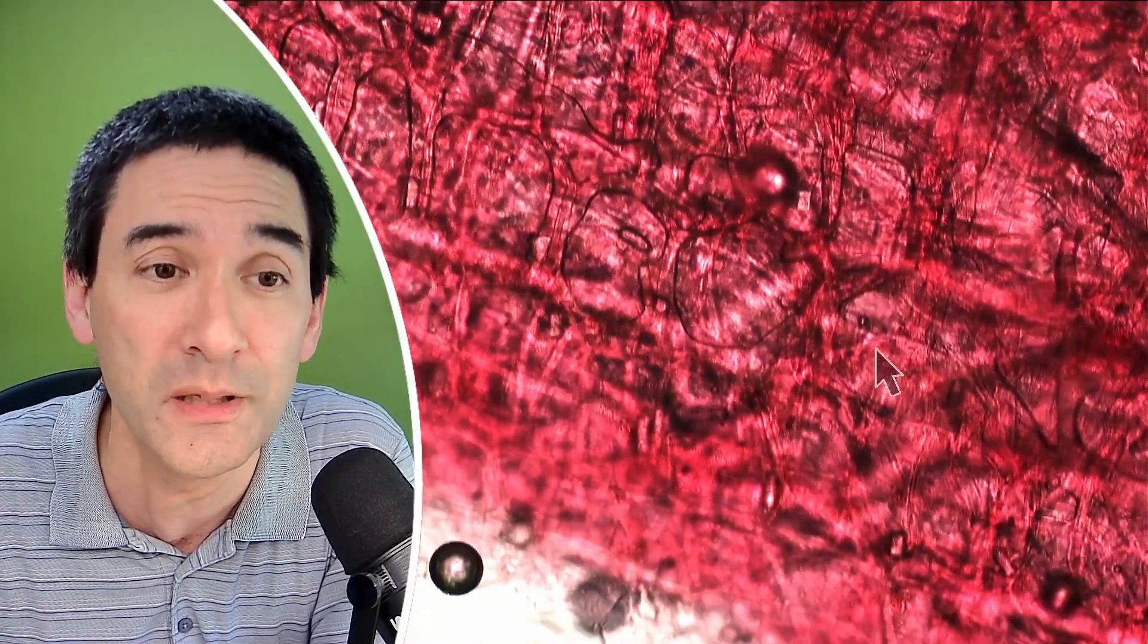But when you add, for example, oil to paper, then the paper also becomes translucent, it allows light to go through. And the similar thing also happens with the onion skin. If you add oil, then it will also become a little bit more translucent, allowing more light to go through.